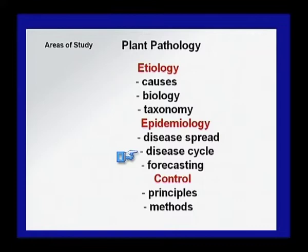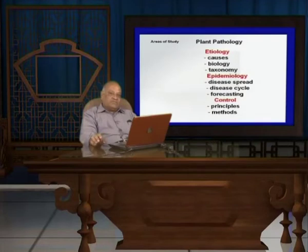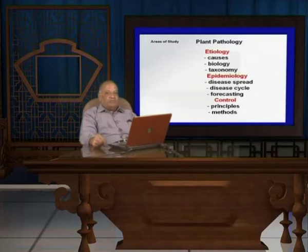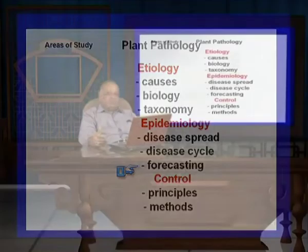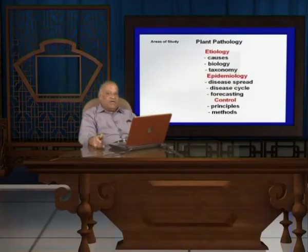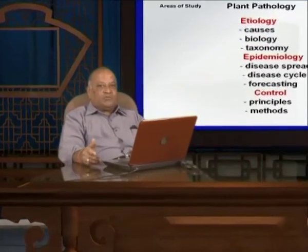By studying the disease cycle, we can see how the disease is perennating and perpetuating in the field in the long run on a particular crop, and how we can intercept disease occurrence by spraying certain pesticides, fungicides, or using organic materials to control the disease. Then comes forecasting: the science that tells us how much temperature, rainfall, and humidity will be present in the environment at a particular time, and what measures we should take to curb the appearance of disease beforehand. Because in plant pathology, the principle is that prevention is better than cure.